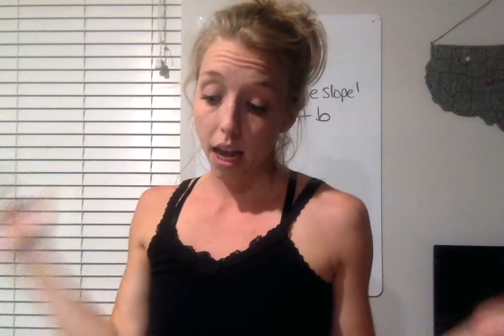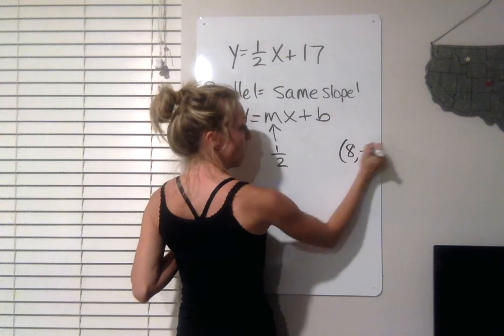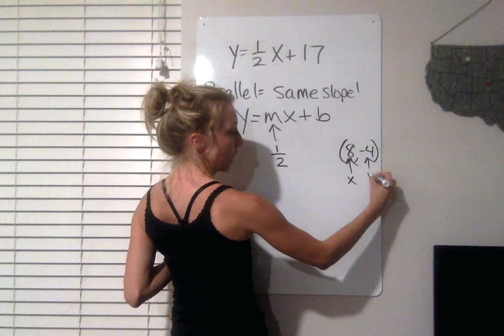So if my point is 8 negative 4, that means my X value is 8. My Y value is negative 4. I'm going to plug those in for my X and Y to find my Y intercept.